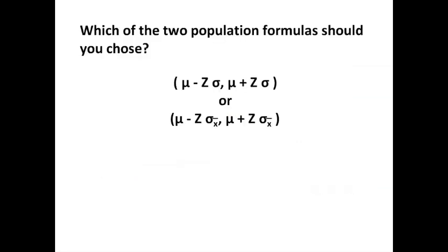Now, if it's a raw data value interval, which of these two formulas should we use — both of which are under the population confidence interval? The first, mu minus z times sigma and mu plus z times sigma, with upper and lower bounds, is for data. The other one, mu minus z times sigma x-bar and mu plus z times sigma x-bar, is for the x-bar distribution. We will utilize the first formula: mu minus z times sigma and mu plus z times sigma — the formula for the confidence interval for a data distribution of a population when we know mu and sigma.